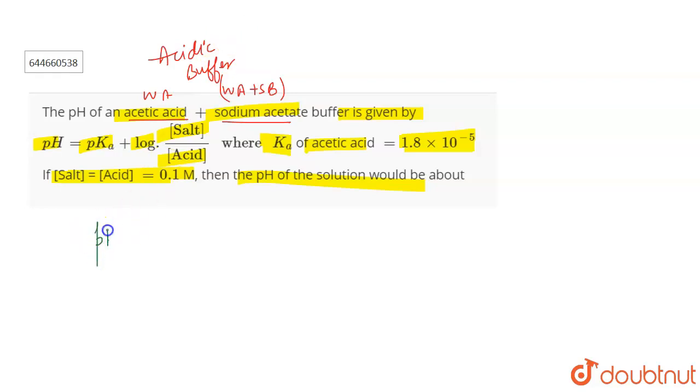So the expression for pH is already given to you that pH equals pKa plus log of concentration of salt upon acid. Now the concentration of salt and acid, they are same. So I can cancel it out because the concentration is the same.